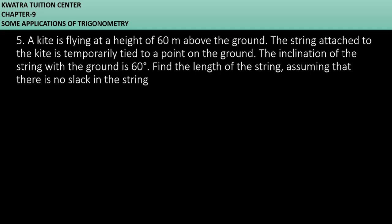Let's start with question number 5. It says a kite is flying at a height of 60 meters above the ground. The string attached to the kite is temporarily tied to a point on the ground. The inclination of the string with the ground is 60 degrees. Find the length of the string assuming that there is no slack in the string.